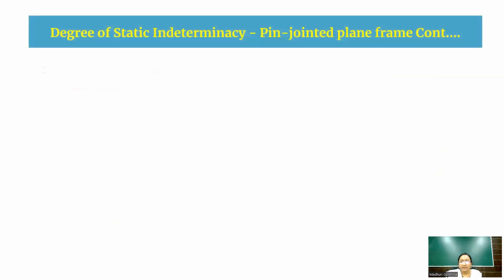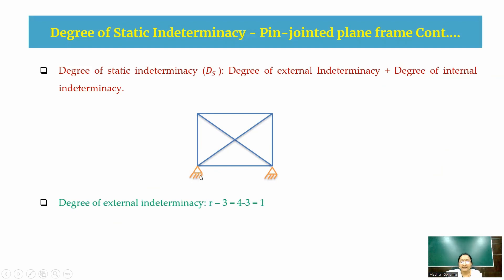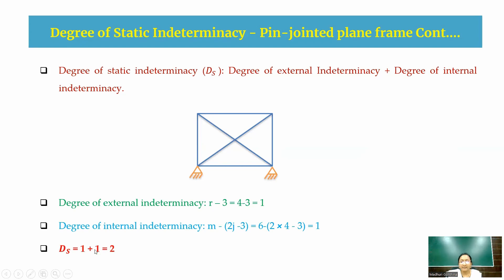For a pin-jointed truss example, the degree of static indeterminacy = external indeterminacy + internal indeterminacy. External indeterminacy: two hinge supports each give 2 reactions, totaling 4, minus 3 equilibrium equations = 1. Internal indeterminacy = M − (2J − 3): with 6 members and 4 joints, internal indeterminacy = 6 − (2×4 − 3) = 1. Therefore total DS = 1 + 1 = 2.